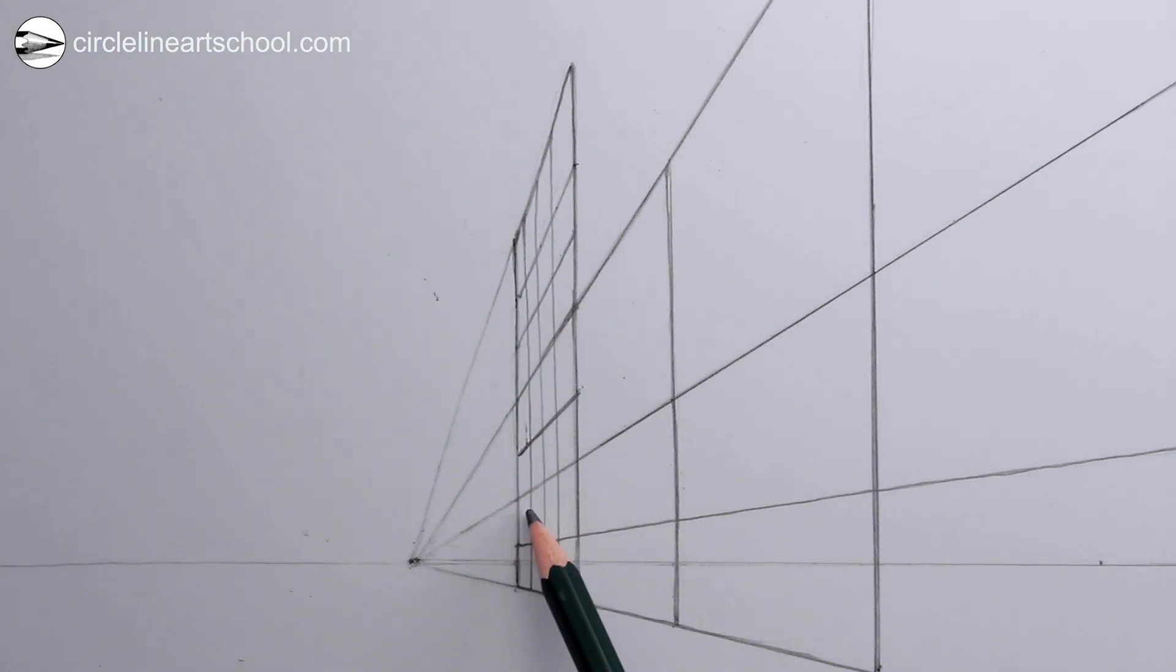So basically we're drawing a grid on the side of a long building which we're seeing at an angle in two-point perspective.